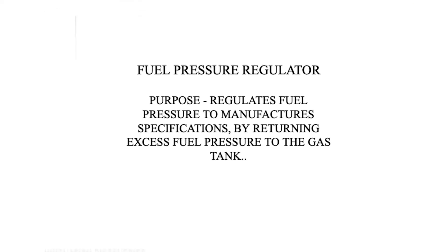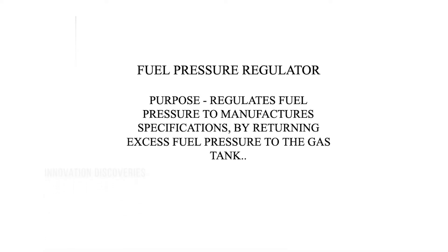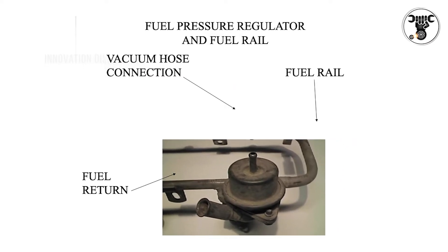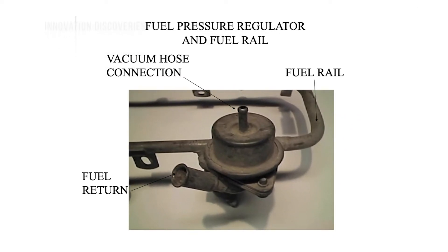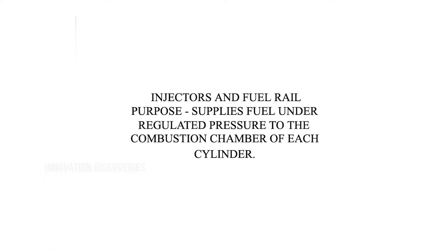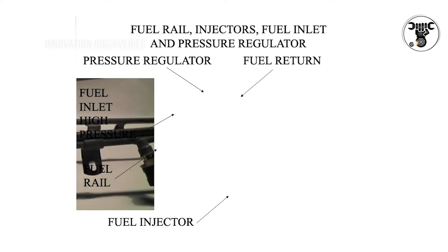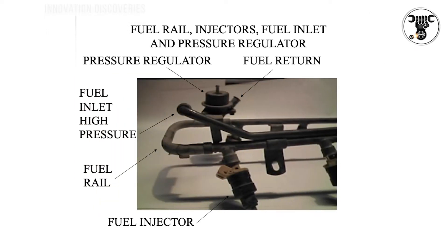Fuel pressure regulator purpose: regulates fuel pressure to manufacturer's specifications by returning excess fuel pressure to the gas tank. Components shown include the fuel pressure regulator, vacuum hose connection, and fuel rail. The fuel rail purpose: supplies fuel under regulated pressure to the combustion chamber of each cylinder.